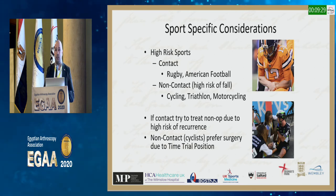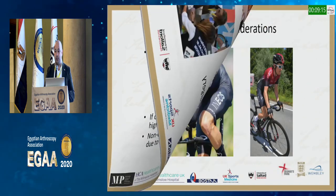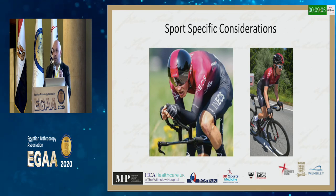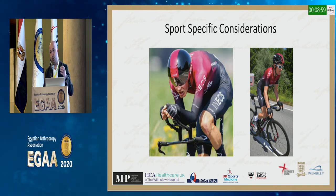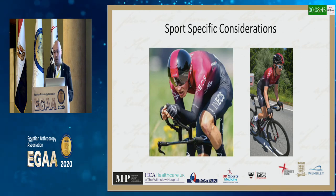In the time trial position, significant force travels up the arm into the axial skeleton at the AC joint, and they really struggle without a stable AC joint. Climbers also push their bikes forward on the weight of their arms. Cyclists often present on day one after injury expecting surgery. The surgical options include the hook plate, the Weaver-Dunn procedure, a hamstring graft, or a synthetic graft, with or without excision of the distal clavicle.